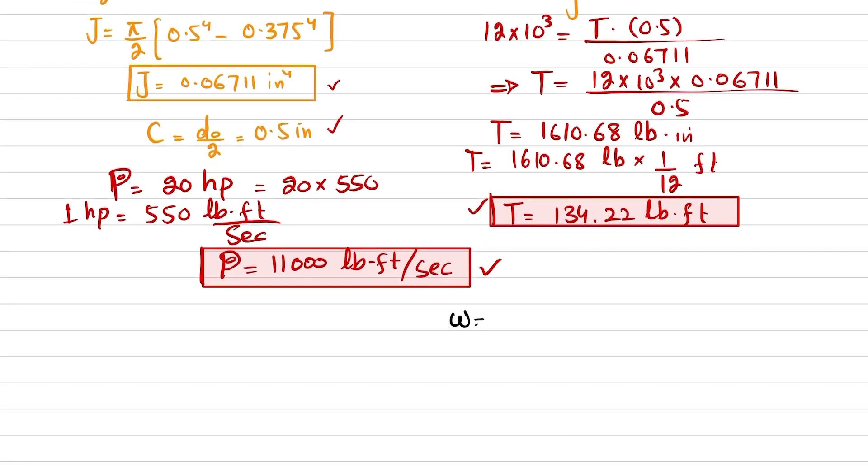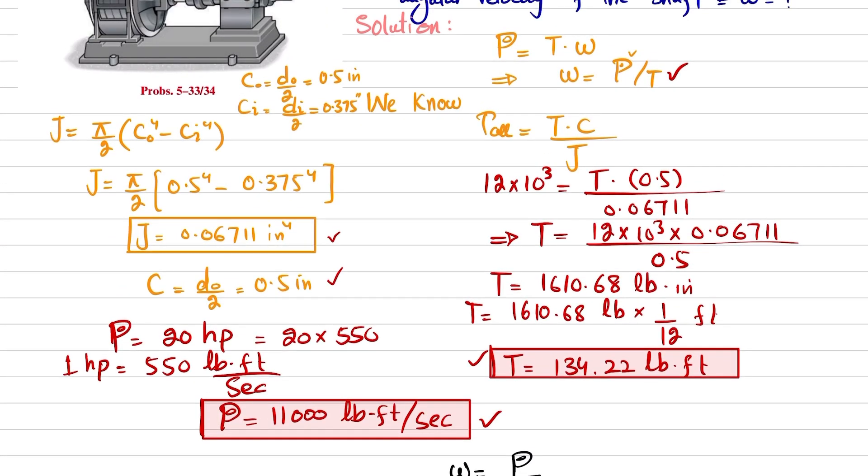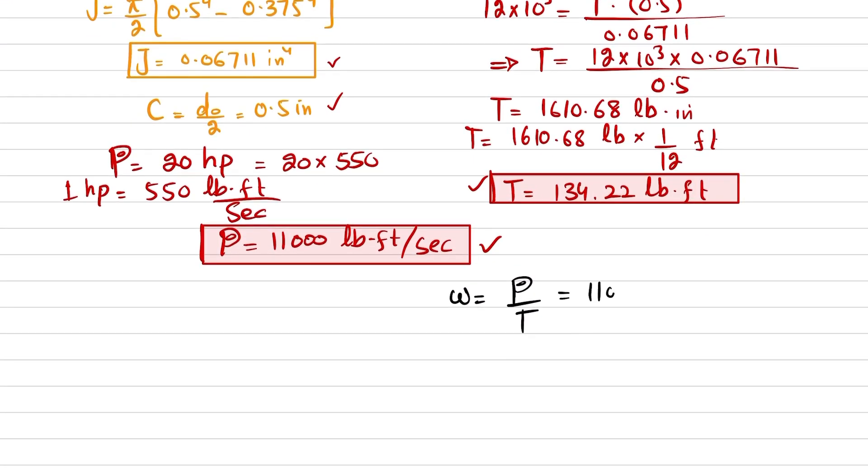Omega, which is angular velocity, is equal to power divided by torque. So power is 11,000 divided by torque is 134.22. So when you solve this, you will get angular velocity is equal to 82.0 radians per second. So minimum angular velocity is 82 radians per second.